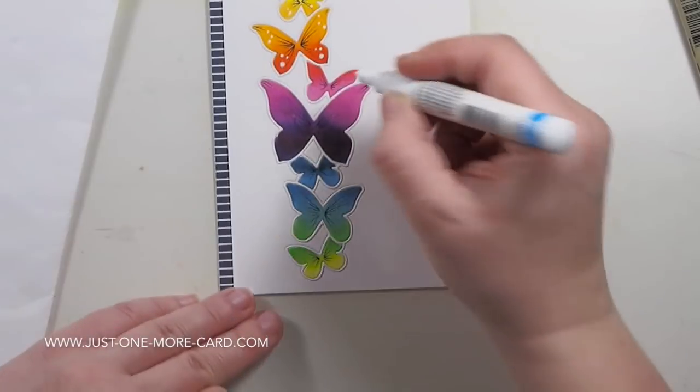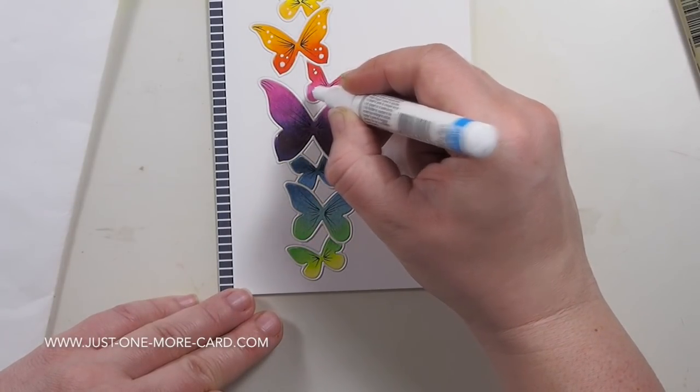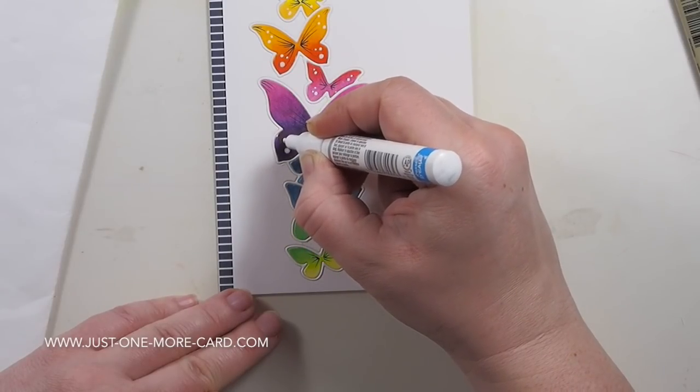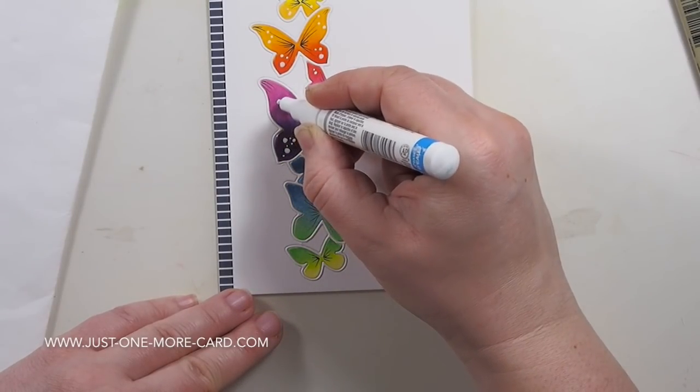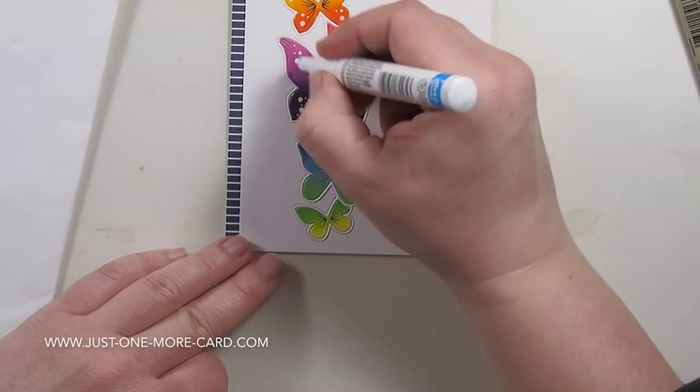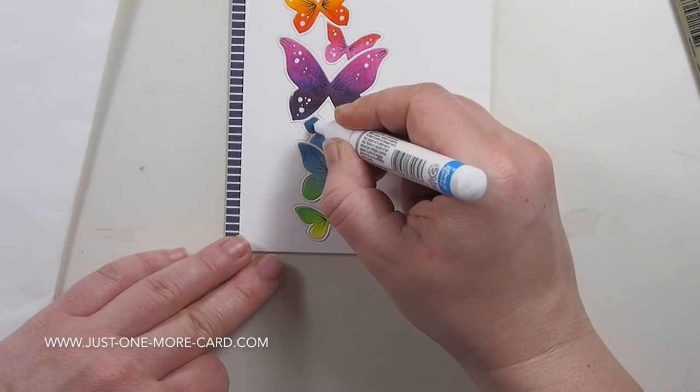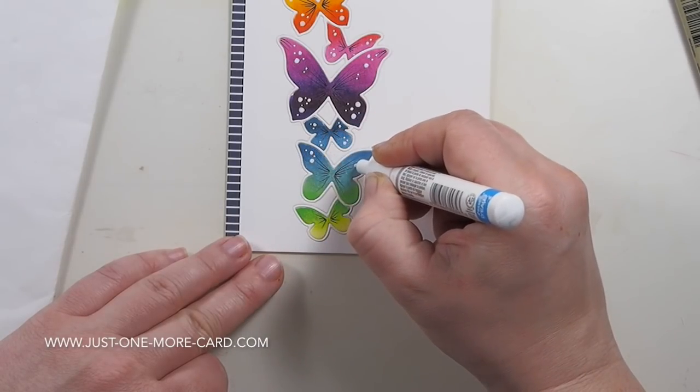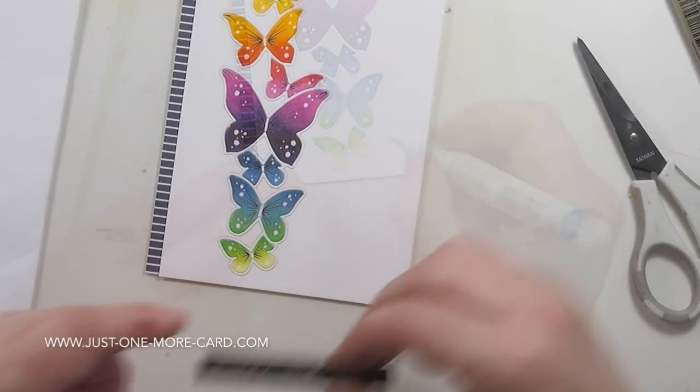Then I'm using my Sharpie white marker just to add some white dots here and there, because I just feel it adds even more interest to those butterflies. You can see that I like to do my usual pattern of three larger dots and then fill in space with smaller dots. And of course, you have to vary it a little bit depending on the size of your shape or your stamp.